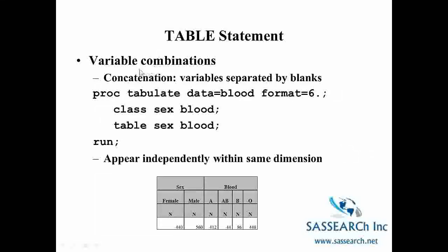Here is another example of a TABLE statement. So here we are looking at concatenation where we have variables separated by blanks. So again we always need to have a CLASS statement which tells SAS what variables are going to be used in that PROC TABULATE procedure. And then here we just have no comma at all. We just have the variables sex, space, blood. And so what we see in this table is that the two variables appear as separate tables within the same dimension. So the big difference in this slide compared to the previous one is note we have no comma in the TABLE statement. Also note here that I've given a format 6. and what the format 6. tells SAS is that our columns are six digits wide with no digits to the right of the decimal point.